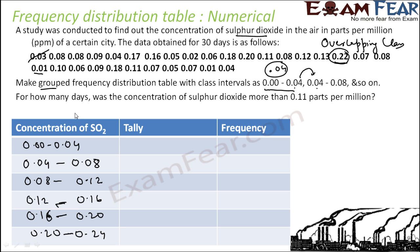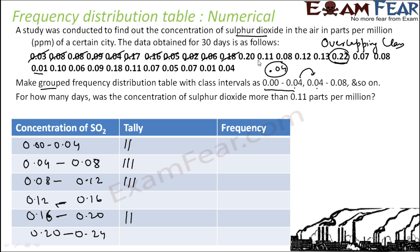0.03 goes in the first class. 0.08 — it will not be in the first class, it will be here in the second. 0.08 again will be here, 0.09 again here. 0.04 — it will not be in the first class, it will be here because this part is not included. 0.17 is a big number, it will be here. 0.16 will be in this class, not the next one. 0.05 will obviously be here. 0.02 will be here.